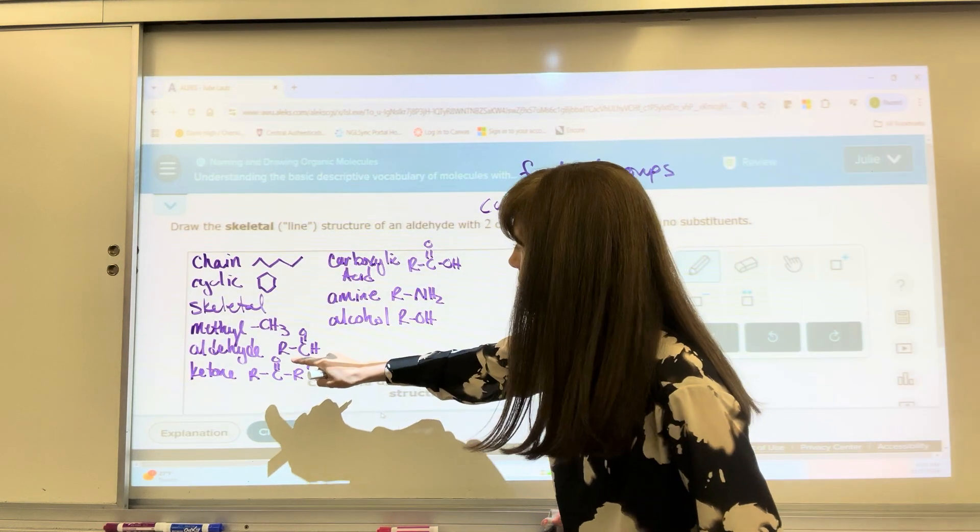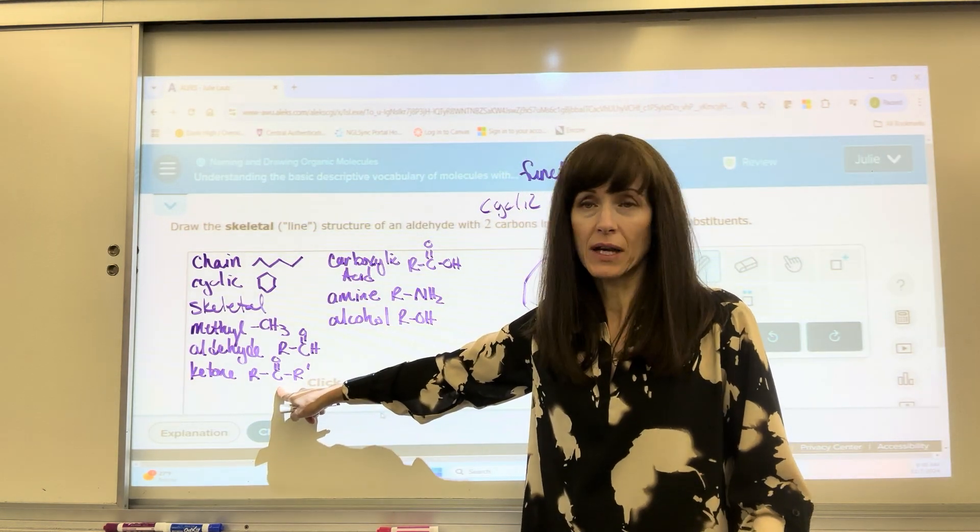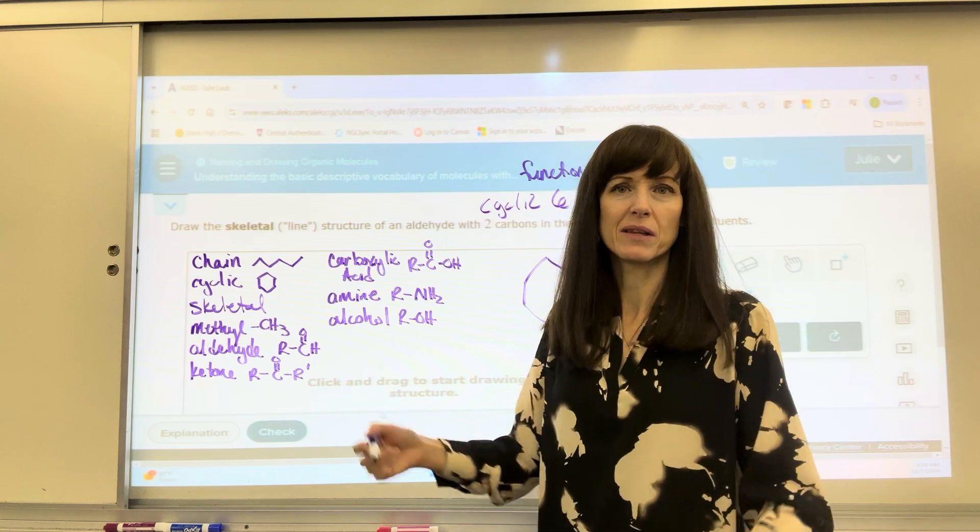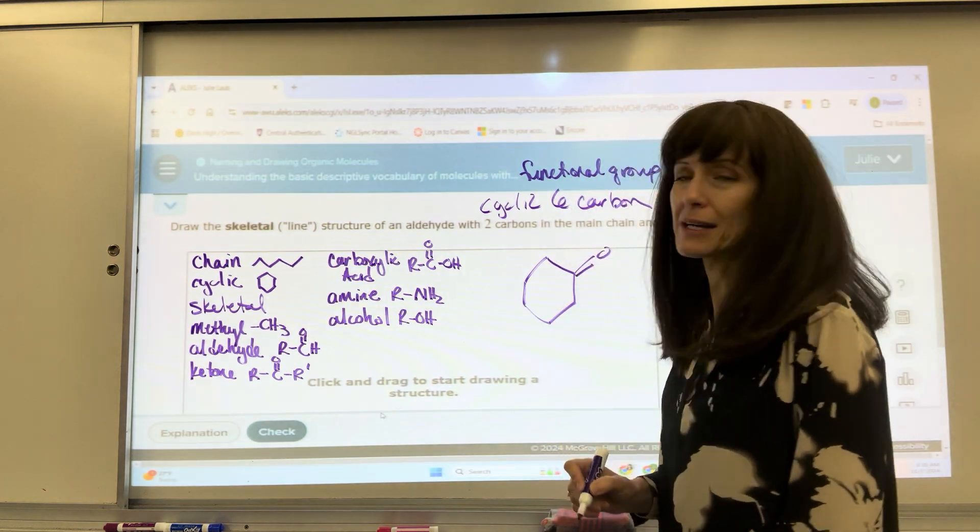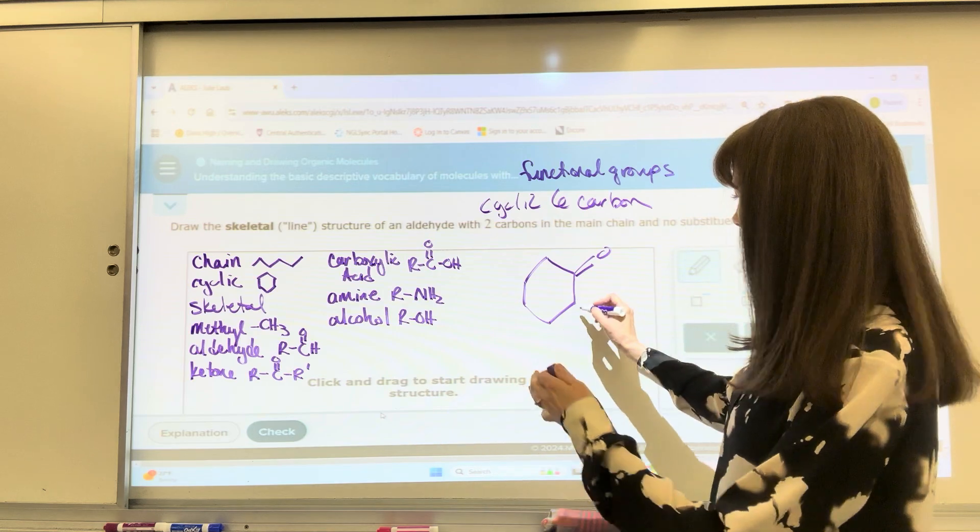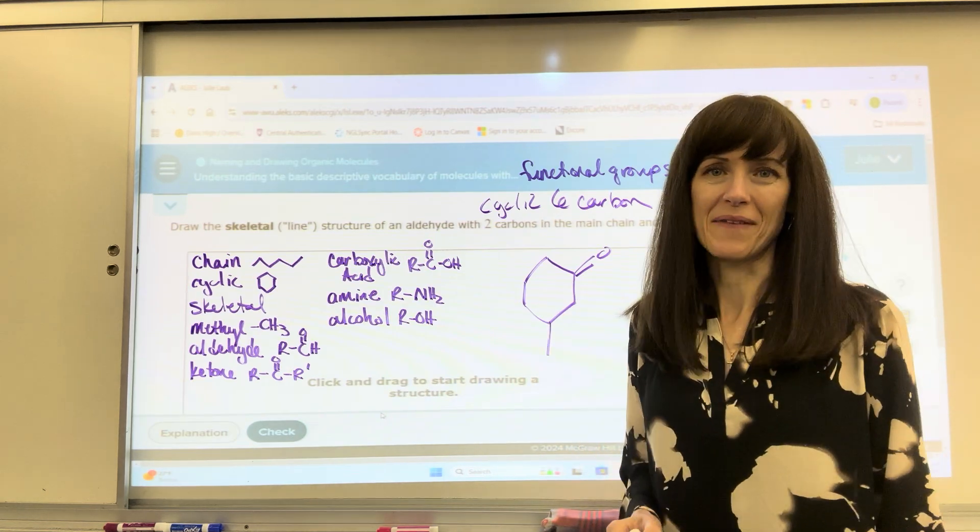Maybe we have a ketone. The ketone right there, we haven't seen a ketone yet. Double bonded oxygen anywhere in the middle. So I could put a ketone right there. If I had a methyl group, I could put a methyl group anywhere on that. Okay.